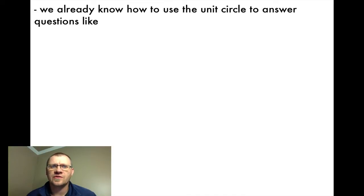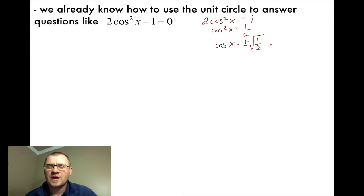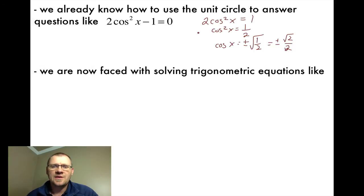We already know how to use the unit circle to answer questions like 2cos²x - 1 = 0. To do something like that, we would just isolate cosx by moving the one to the other side, and then dividing by 2, and then taking the square root of both sides. So cosx equals plus or minus √(1/2), and that ends up being plus or minus √2/2. We know how to solve these equations from last unit using the unit circle.